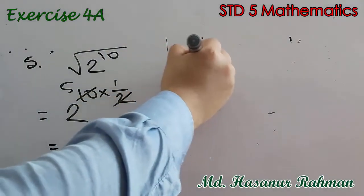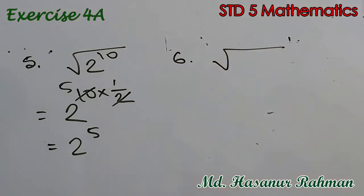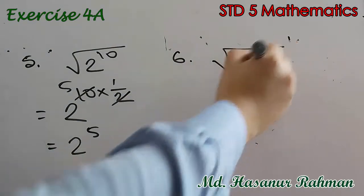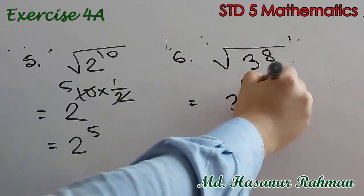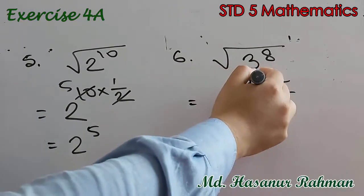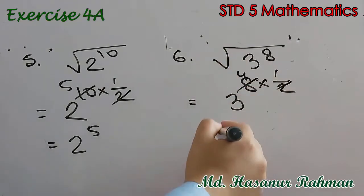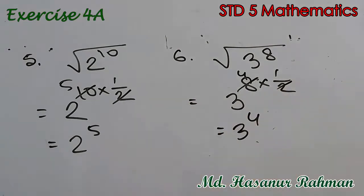Number 6: square root of 3 to the power 8 means 3 to the power 8 into half. When you divide 8 by 2 you get 4, so the answer is 3 to the power 4, and that is the answer of number 6.